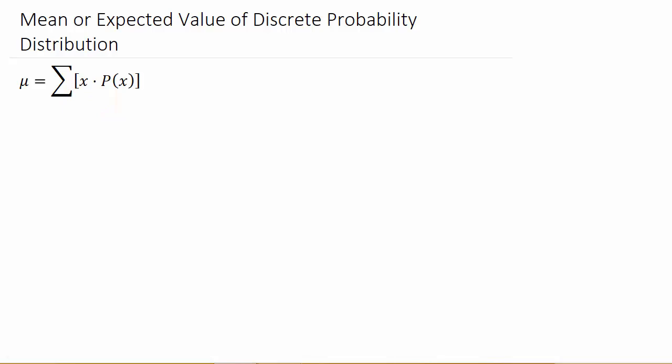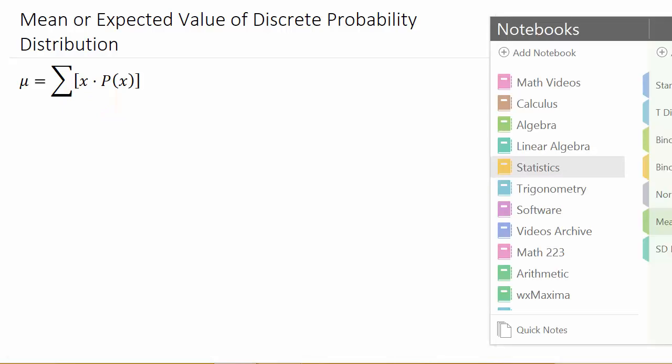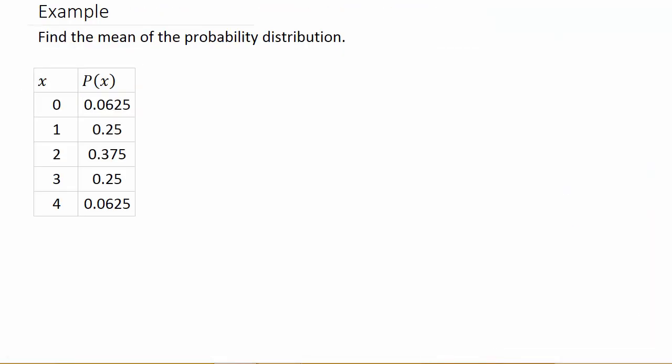So let's look at an example. So here we have a discrete probability distribution. We have our x values. They represent something, whatever the problem is based on. You'll have your x values and this is the probabilities.